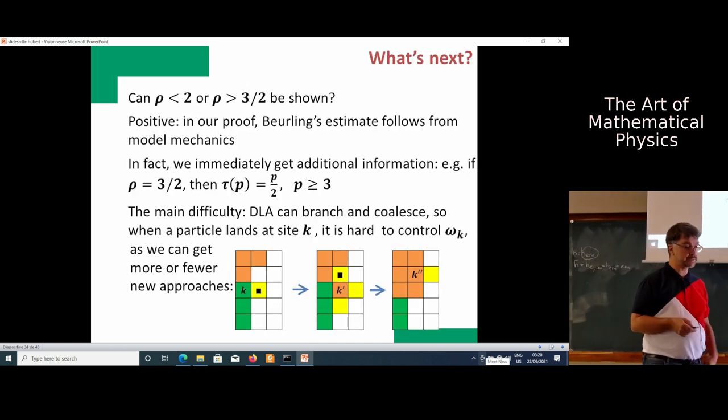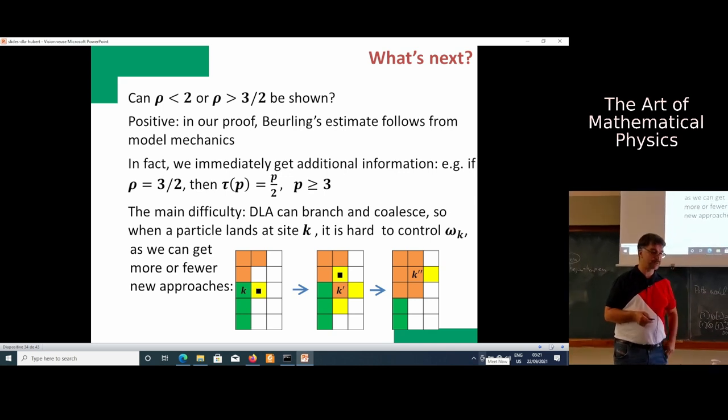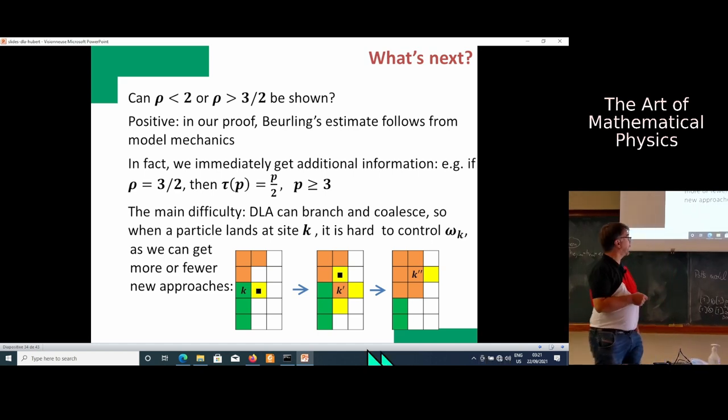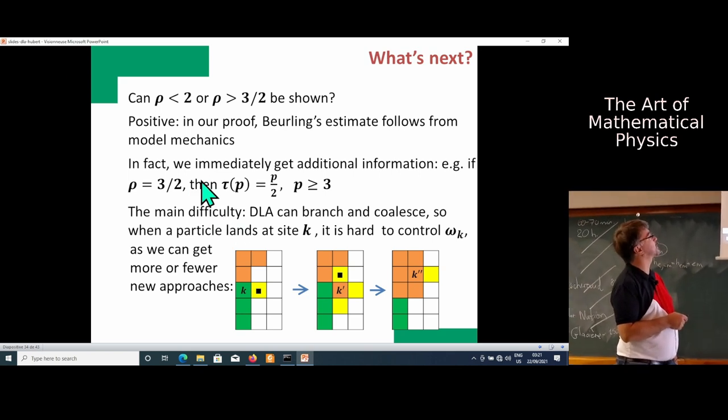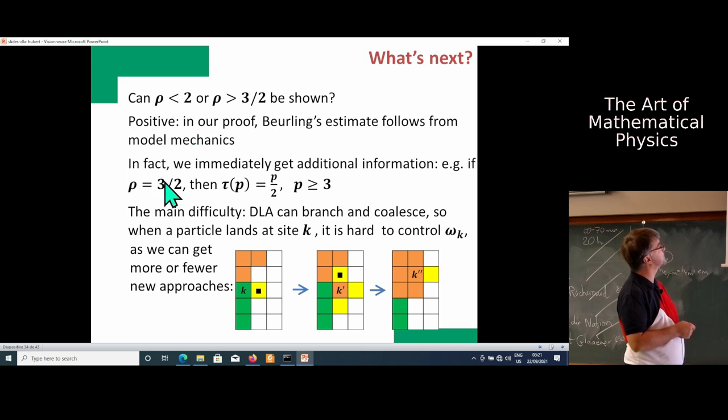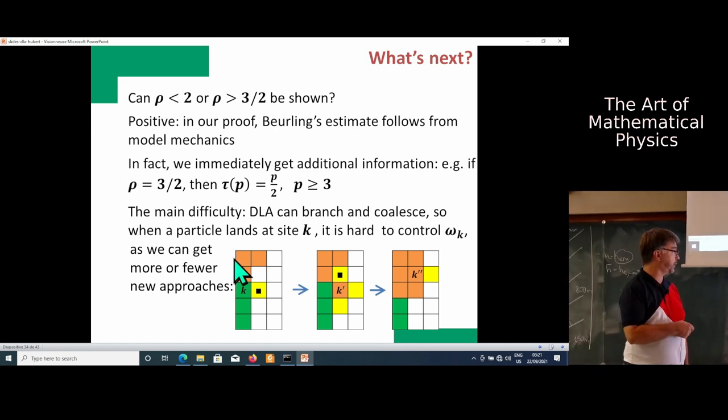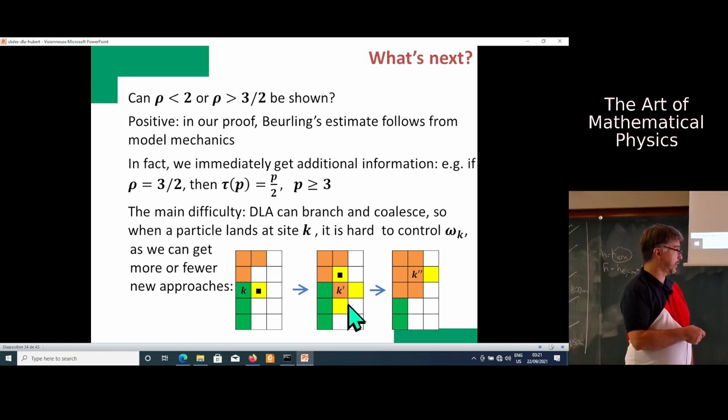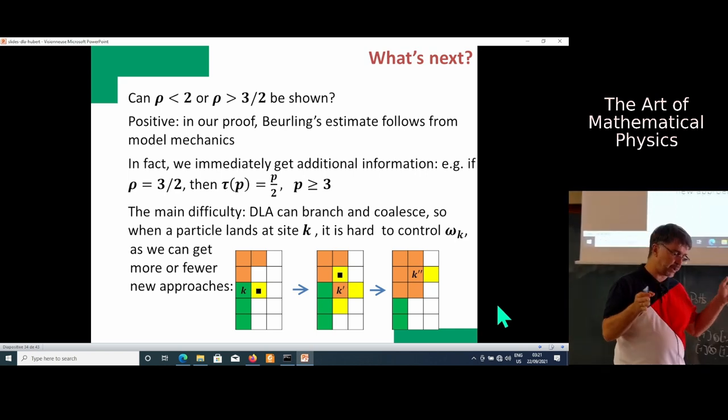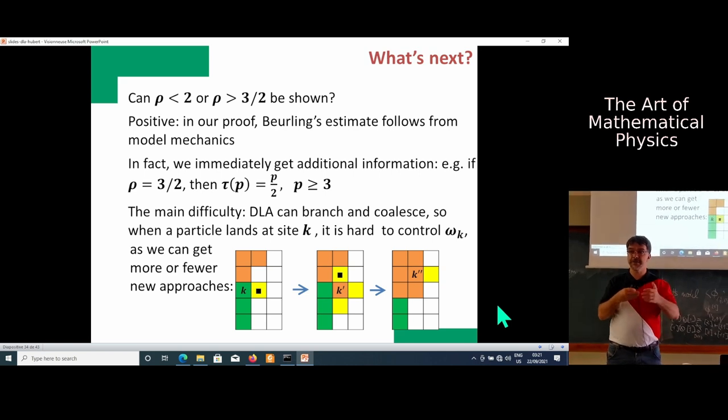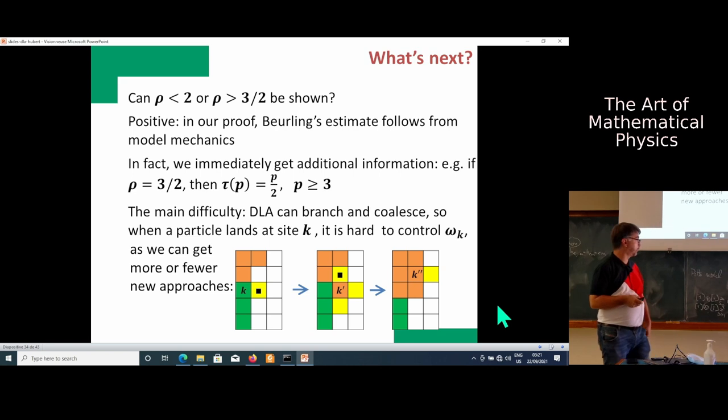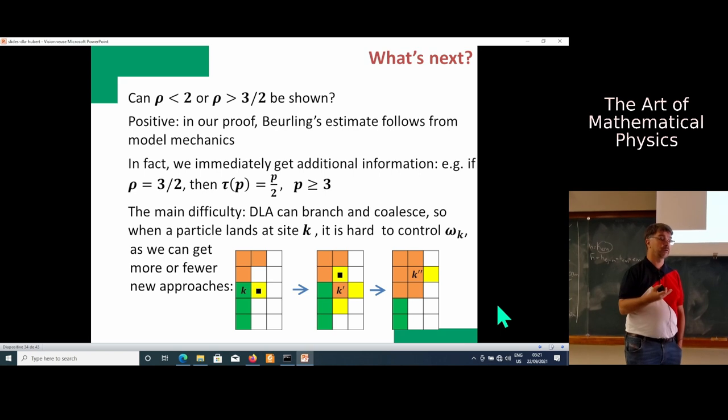What is next? Can we show that rho is more than three halves or smaller than two? There is a big problem here. The main problem is that our thing coalesces and branches. For example, there is one way to attach a particle at site K. But when we attach it here, at K prime there are three possibilities where to attach. When we attach here, there is again only one possibility. At microscopic level, this thing branches and then coalesces. That completely ruins all the accounting we can think of. It's not clear what to do with that.